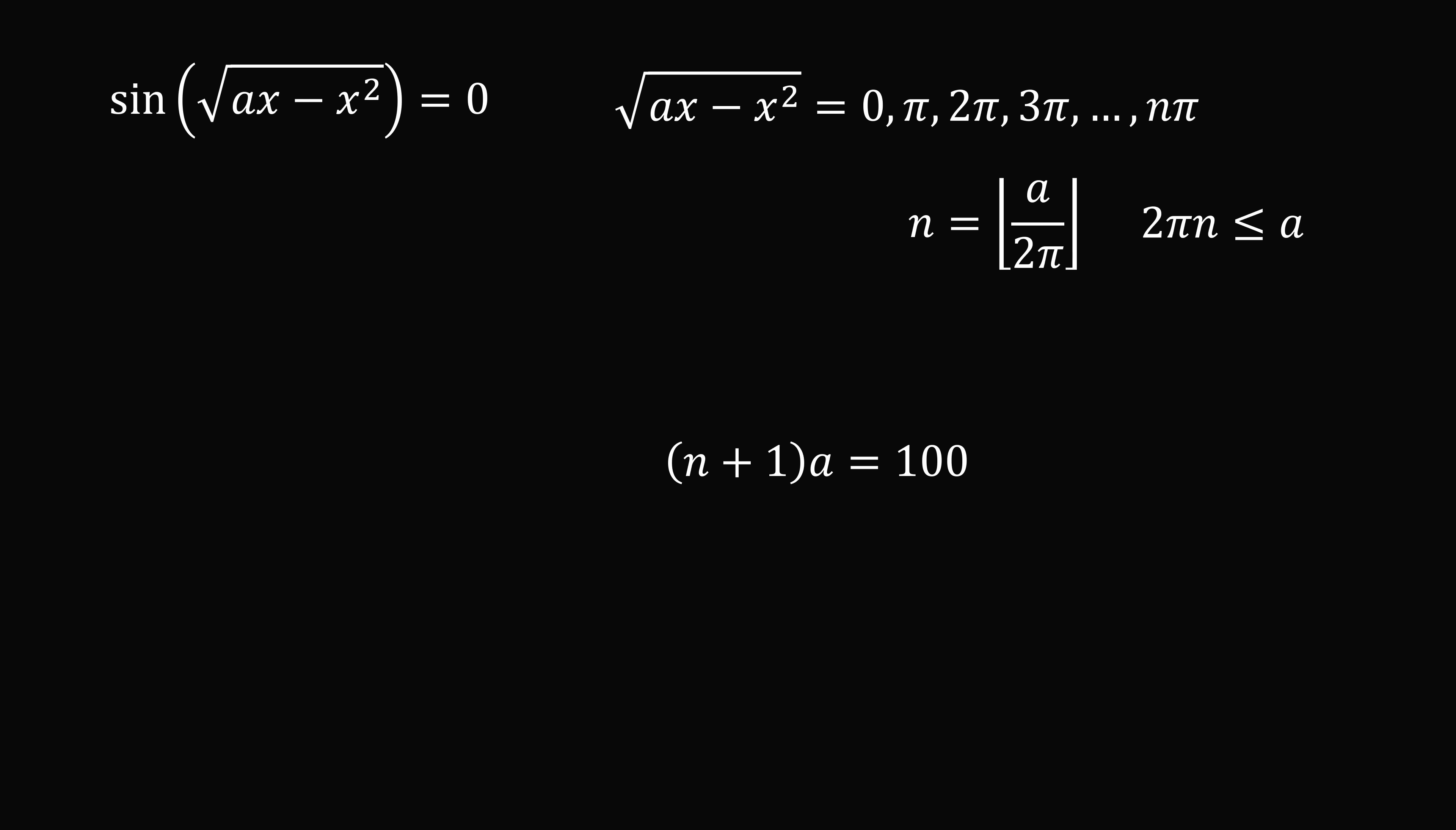So let's focus on this equation. Now utilizing the fact that a is greater than or equal to 2 pi n, if we substitute 2 pi n for a, we're going to get something that's less than or equal to 100. So 100 is greater than or equal to the quantity n plus 1 multiplied by 2 pi n. This allows us to figure out an upper bound on n.